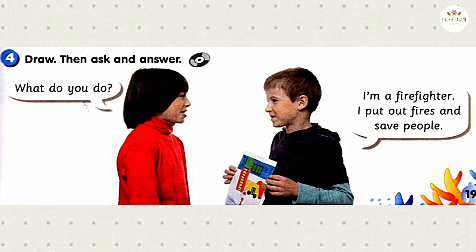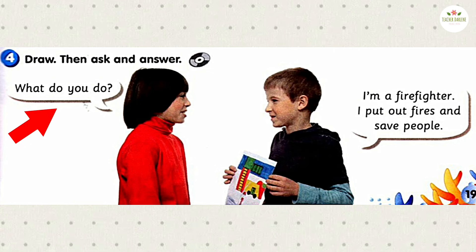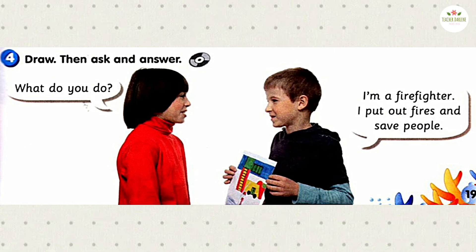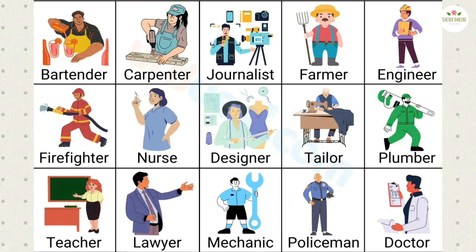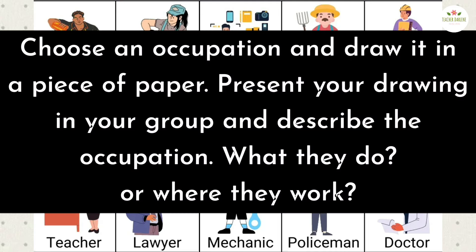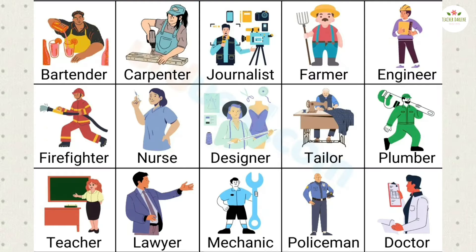Activity 4. Draw, then ask and answer. Look at the picture — Tony has made a picture of a firefighter and is showing it to Alex. Listen: What do you do? I'm a firefighter. I put out fires and save people. Listen again and repeat. Now choose an occupation, draw it on a piece of paper, and present your drawing in your group — describe what they do or where they work.